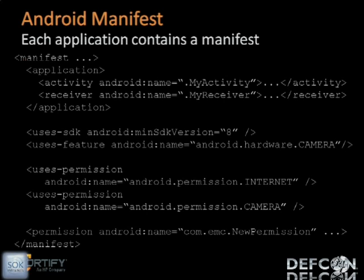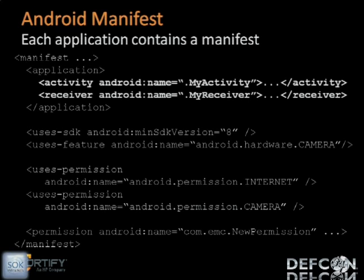Each application contains a manifest, and the manifest does a couple of things. First of all, it declares application components. As you can see in this example Android manifest, there's a MyActivity and a MyReceiver declared here. If the developer doesn't declare the components here, then the system would not know about them.